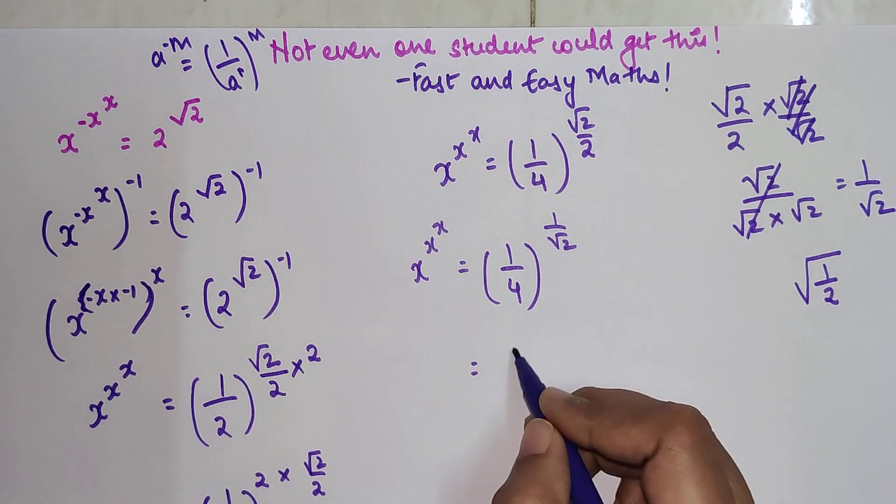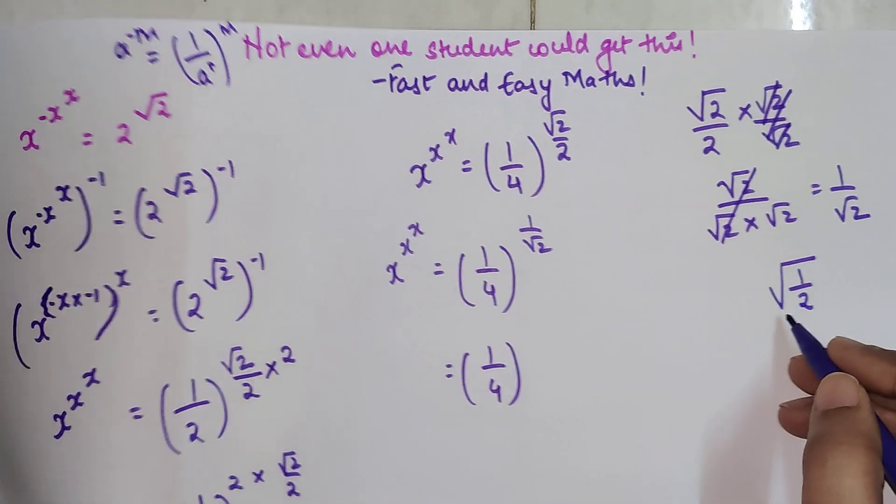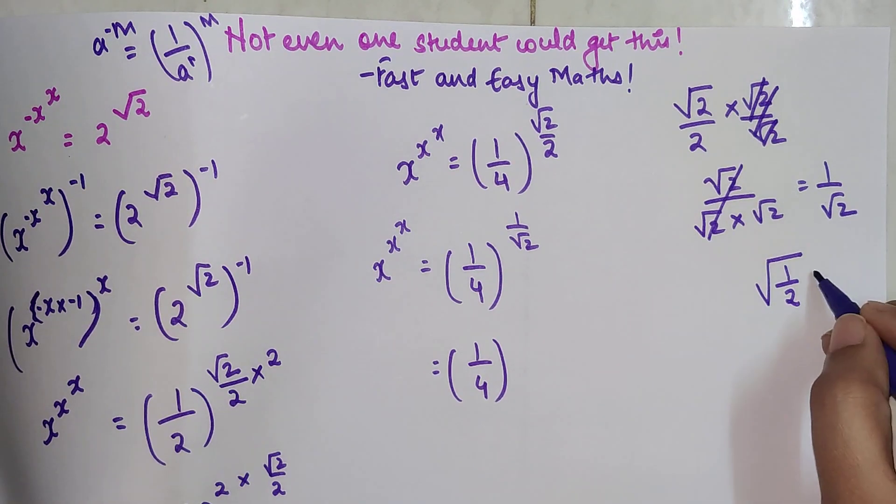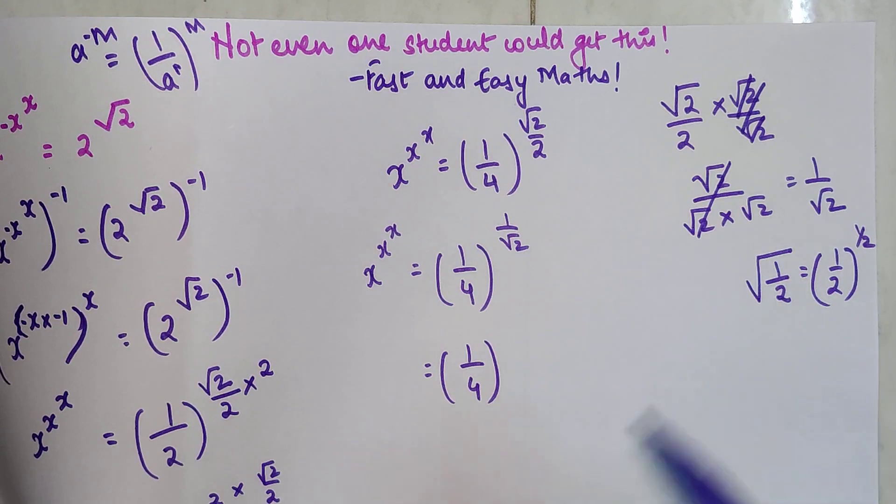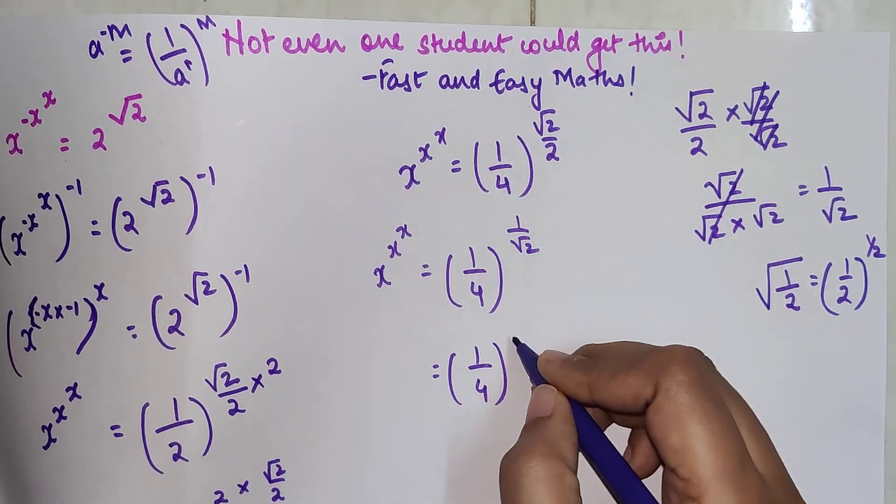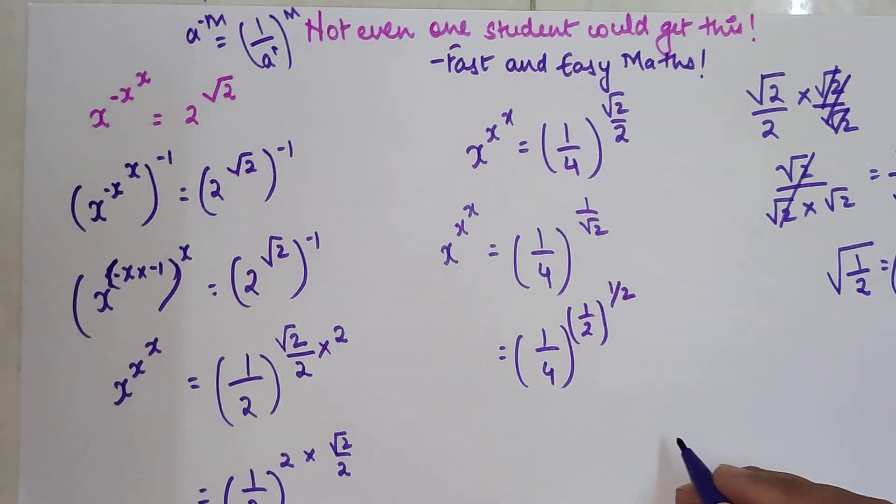So this is 1 upon 4 the whole raised to square root of 1 upon 2. Square root is nothing but index as half. So this is 1 upon 2 the whole raised to 1 upon 2.